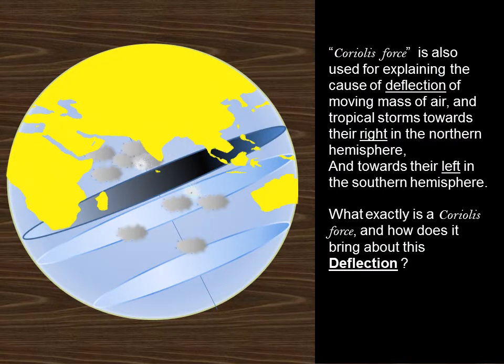Coriolis force is also used for explaining the cause of deflection of moving massive air and tropical storms towards their right in the northern hemisphere and towards their left in the southern hemisphere. What exactly is a Coriolis force, and how does it bring about this deflection?